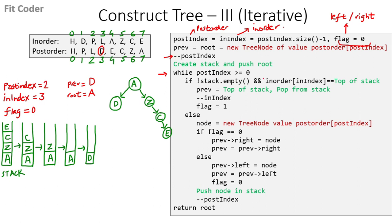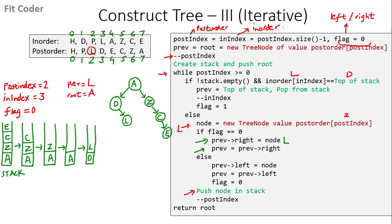In the next iteration, the stack is not empty, the inorder index is pointing to L, and the top of the stack is D — not equal. We come in the else part and create a new tree node with the second postorder index, which is L. Flag is 0, so we set right of previous (D) to L, and previous becomes L. We push L in the stack and decrement postindex to 1.